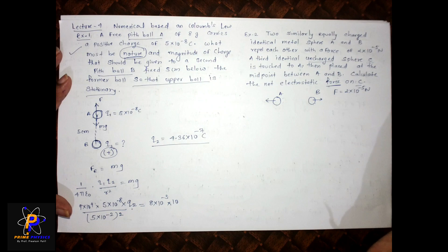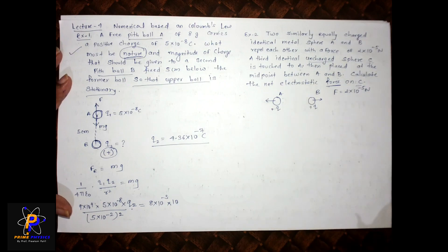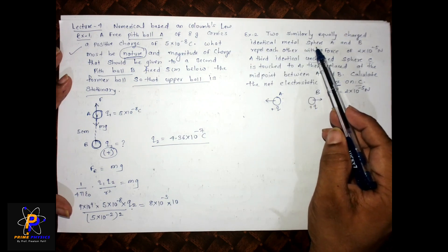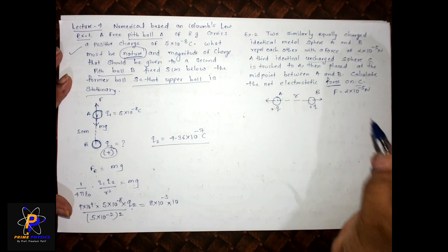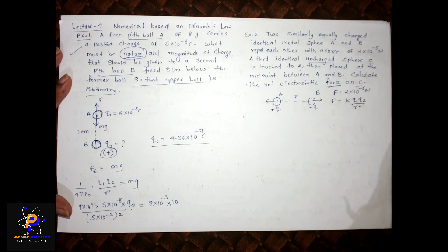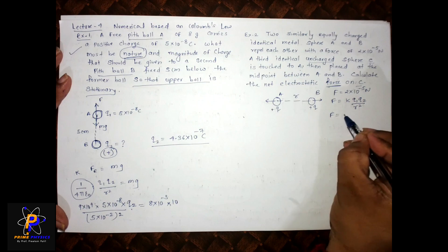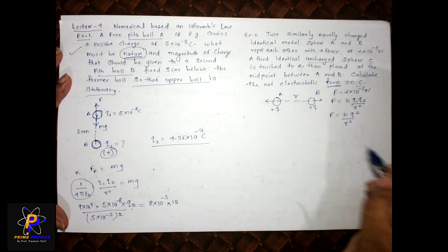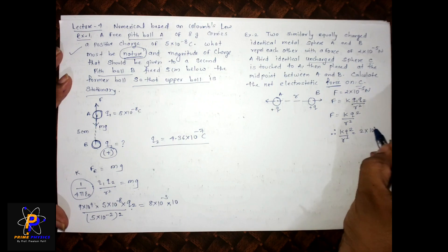Try to solve this sum first — pause the video and attempt it before looking at the solution. So both spheres are identical and equally charged. If A has charge +Q then B also has charge +Q. Let the distance between A and B be R. Using Coulomb's law: F = KQ²/R² = 2×10⁻⁵ N. So KQ²/R² is already known to us.